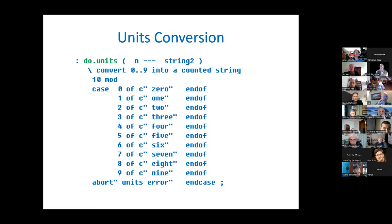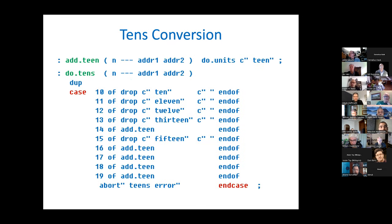So building on that, the first element was to handle units. We have an input number coming in and we do a 10 mod on it, which gets us what the units are. Then using a case statement, we convert this to a string. The case of zero gives us the pure text Z-E-R-O, all the numbers up through seven, eight, nine. And at the bottom is an abort signal in case there's a translation error, which should not occur.